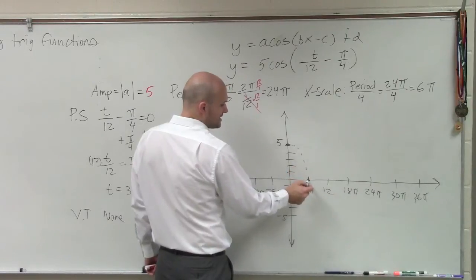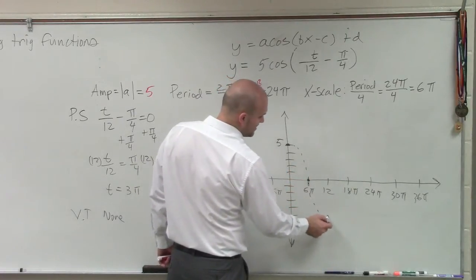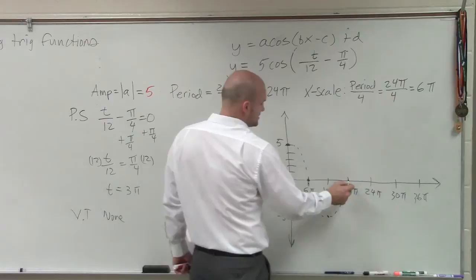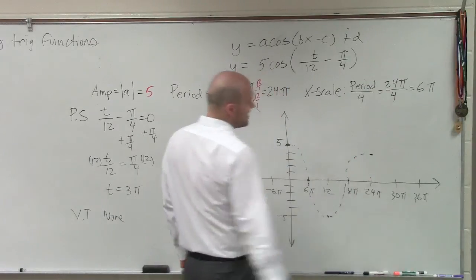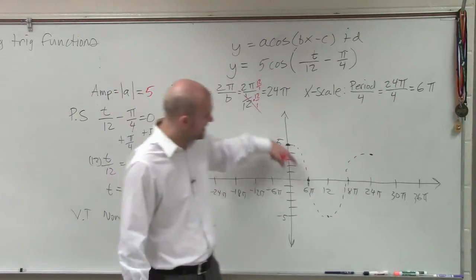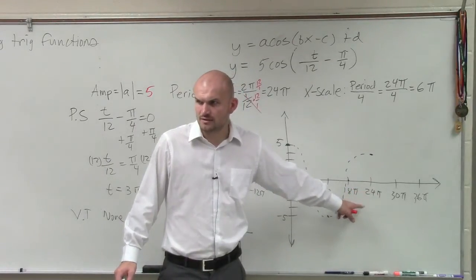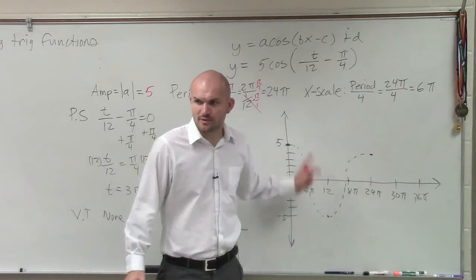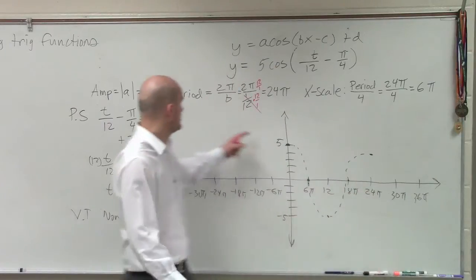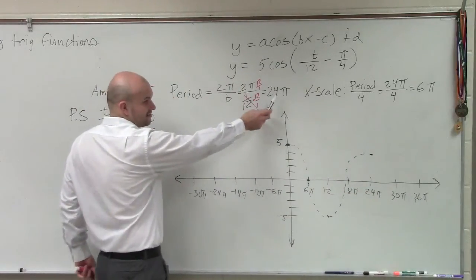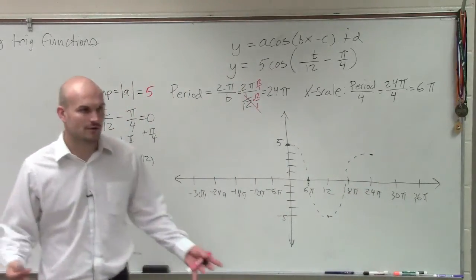And then it goes down to the minimum, crosses here and there. And that's one full period. It contains one full period—how far I get for one full period? How far did it go to complete one cycle? 24. And what did we say how long it was going to take? 24. So I graphed that correctly.